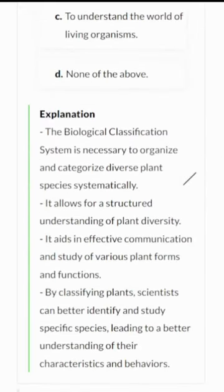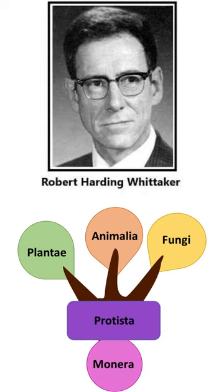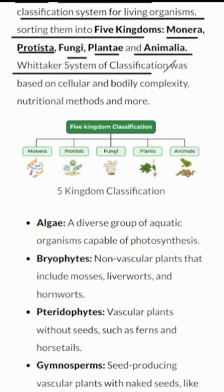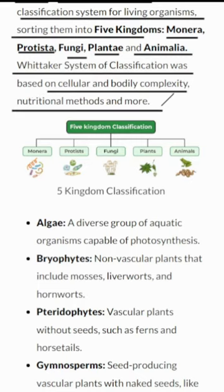Let's travel back in time to 1969 when Whittaker proposed a classification system that changed the way we see the living world. He divided living organisms into five kingdoms: Monera, Protista, Fungi, Plantae, and Animalia. Whittaker's system considered factors such as cellular and bodily complexity, nutritional methods, and more. This system helps us understand how diverse life on Earth can be.